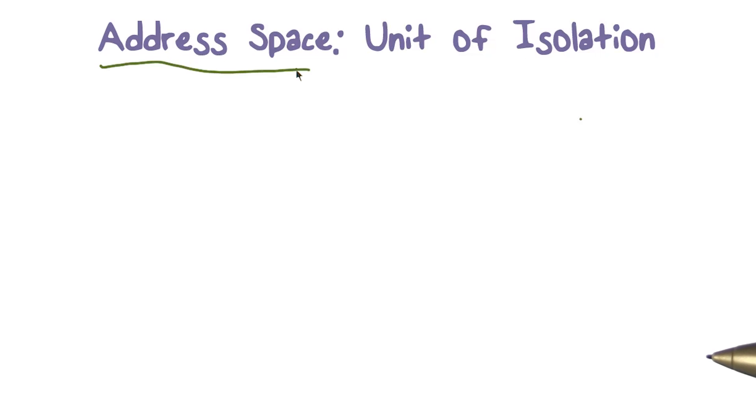Each process has an abstraction of memory that is an address space. An address space actually is going to be a unit of isolation. So when we talked about isolation, now we're talking about isolate what from what else. And we're going to talk about isolating address space.